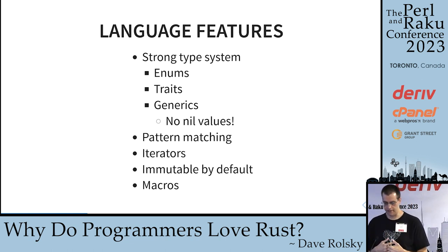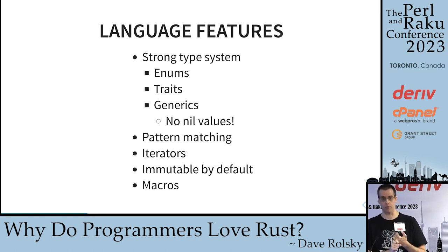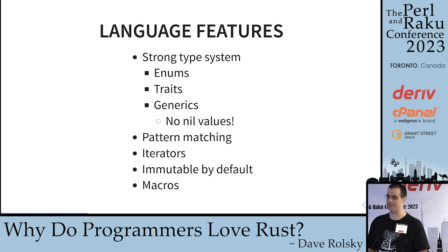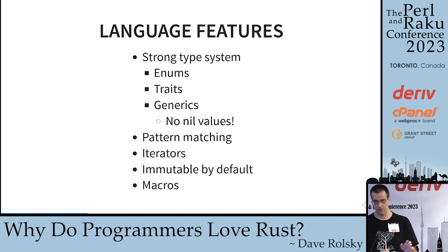One thing I'll say about the type system is that even though it's really powerful, it doesn't have the challenges of pure functional programming. You're unlikely to see the words monad, monoid, category, or arrow when reading Rust documentation, which I am very thankful for. I've tried to learn Haskell a couple of times and really struggled.